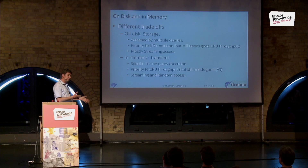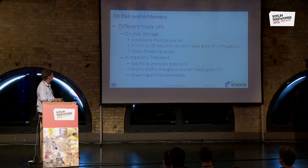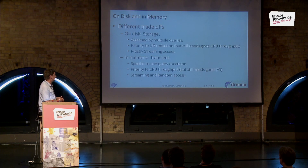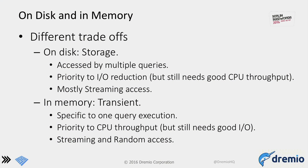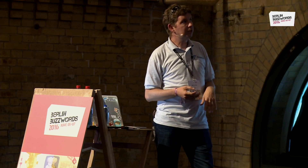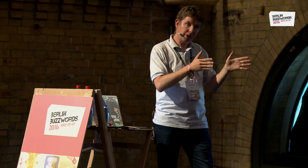Parquet is for on-disk and Arrow is for in-memory, but you could ask: why not just put Parquet in memory? The main reason is different trade-offs and access patterns. For disk storage, you write the data once and it's accessed by many different queries on different columns. The data has to be written once and reused many times. When reading, it's mostly streaming — reading values in order, possibly skipping chunks. So the priority is I/O reduction.